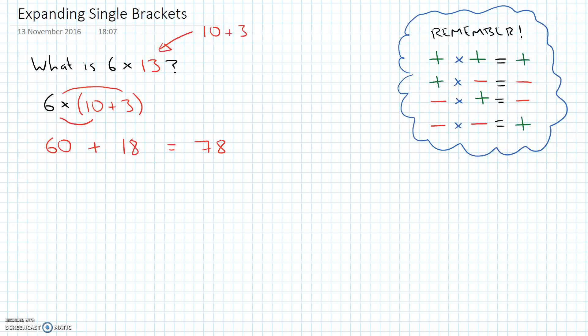So why have we done that? Well, if we work backwards and if we change our example slightly to 6 times, not 10 plus 3, but x plus 3, how would we expand or multiply out those brackets?